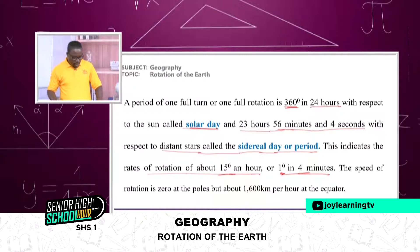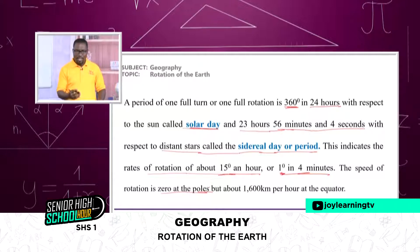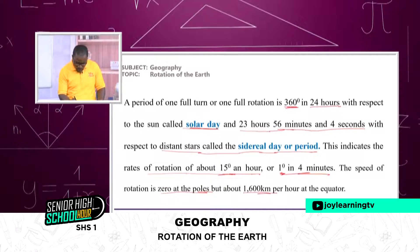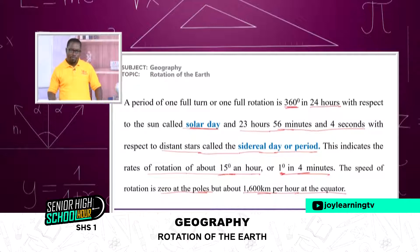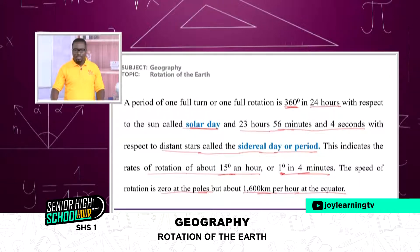The speed of rotation is zero at the poles—at the North Pole and the South Pole—but about 1,600 kilometers per hour at the equator. Please be careful: some books quote 16,890 kilometers at the equator, but that is wrong. I want you to believe it was a typo, so please pardon the author. Joy Learning will give you the correct information.